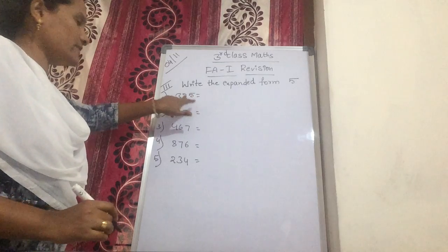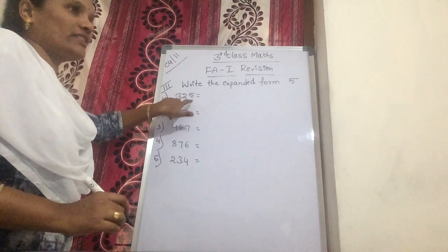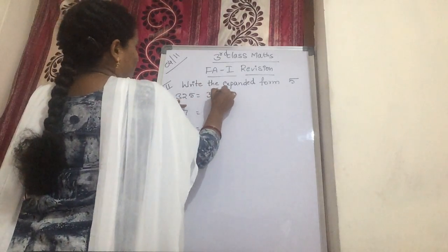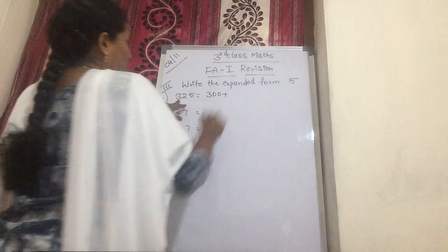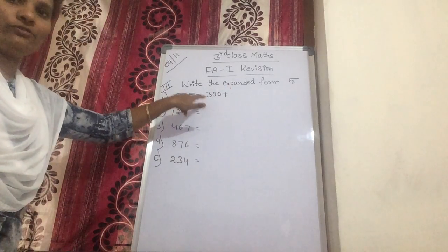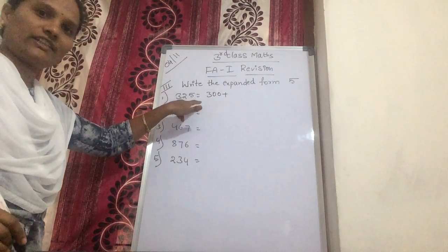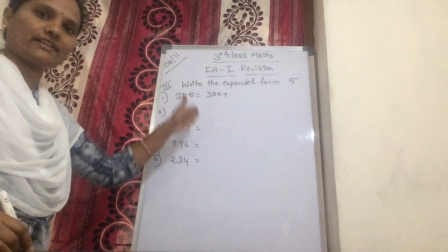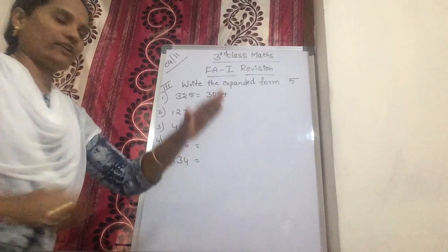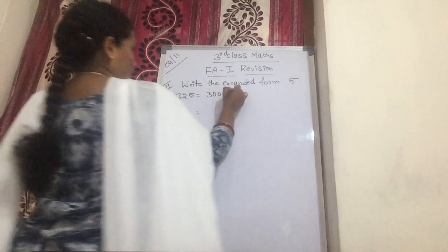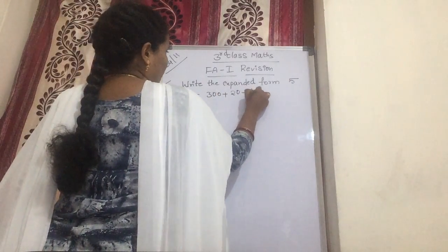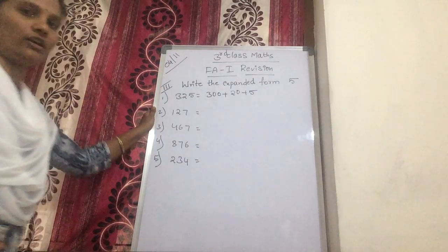How to read this? First, 300. So you should write 300. Again, 25. So 325 equals 300 plus 20 plus 5. Like this. Okay.